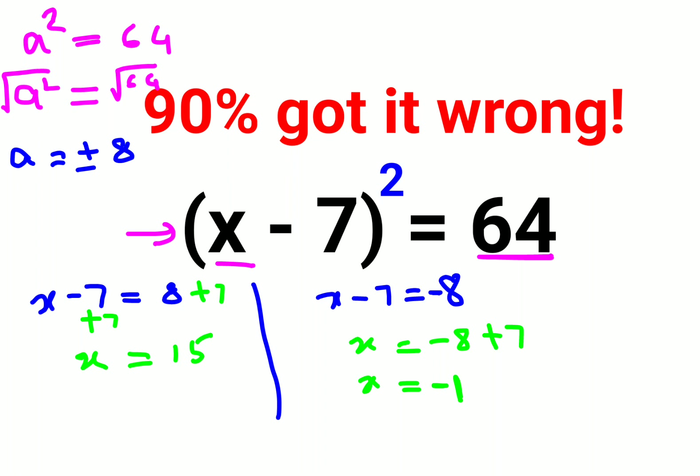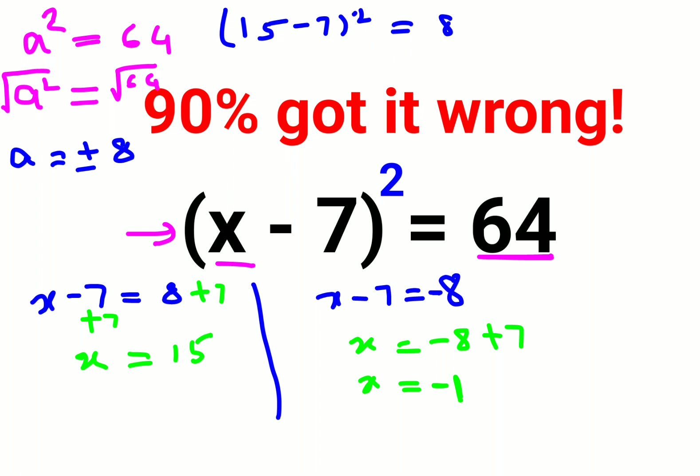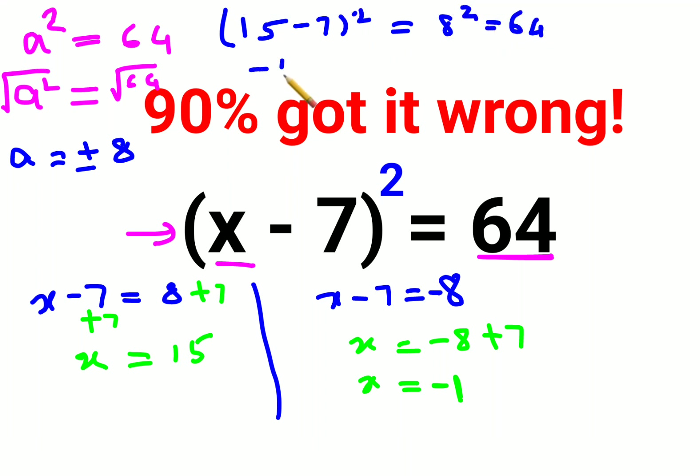Now let's put this value back in the question. So we have 15 - 7 the whole square. If you want to find that, that is basically 8² which is 64. Now we have -1 - 7 the whole square.